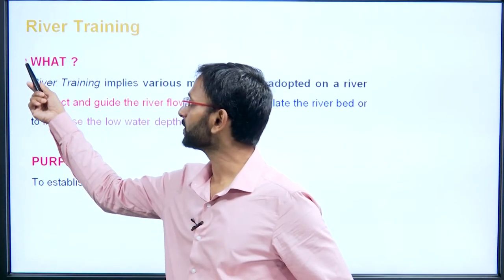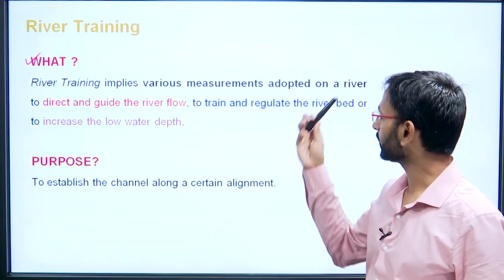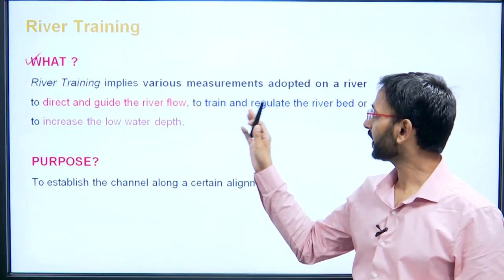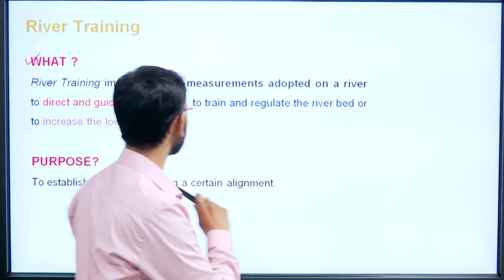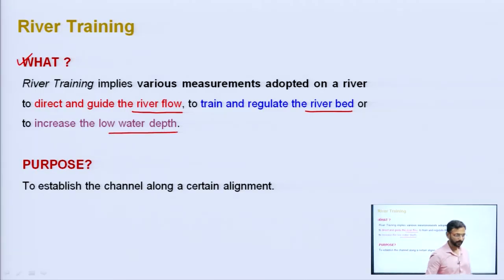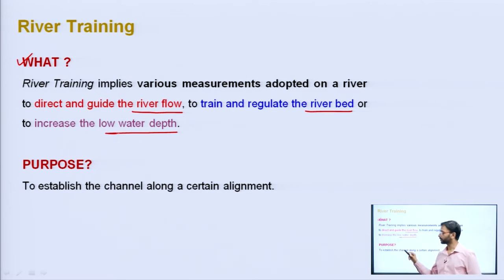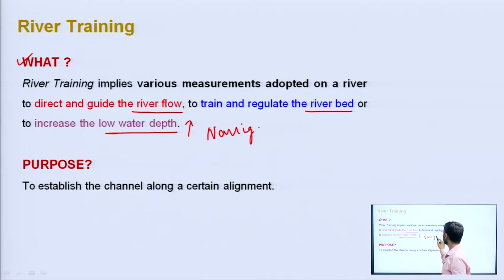River training implies various measures which are adopted on a river to direct and guide the river flow, to train and regulate the river bed, and to increase the low water depth. There are three important terms: river flow, river bed, and low water depth. If the water depth is low, we need to increase it — primarily for navigation purposes, as low water depth is a very big hindrance to navigation.